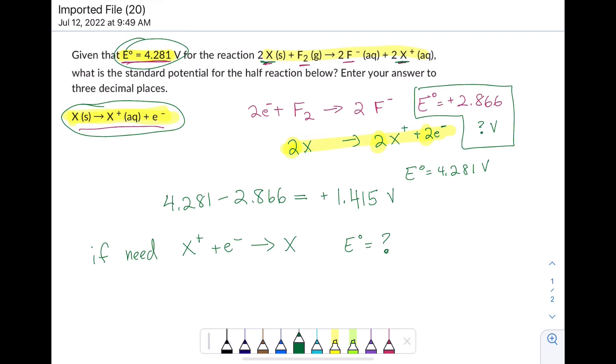If I need X plus plus an electron goes to X, and I want to know the standard cell potential for that half reaction, that would be negative 1.415 volts. Because once I found the cell potential of X going to X plus plus an electron, reversing that reaction changes the sign.